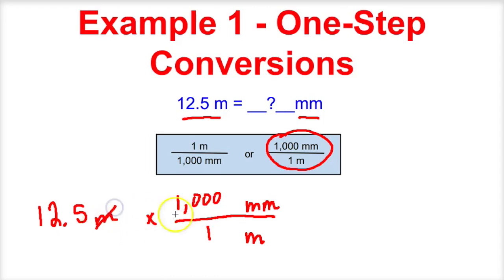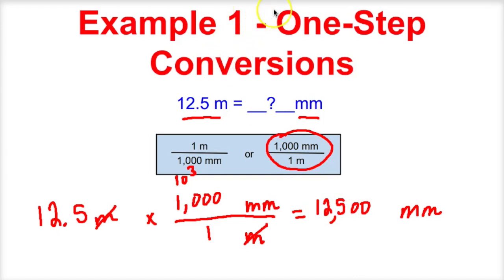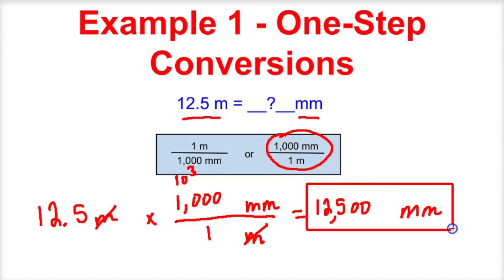Now we can see that meters on top and bottom are going to cancel out, leaving us with millimeters. So we get our calculator out and take 12 and a half times 1,000. When you multiply by a power of 10, all you're doing is moving the decimal to the right. 1,000 is the same thing as 10 to the third, so if we move this decimal to the right three times, we should end up with 12,500. So 12 and a half meters is the same thing as 12,500 millimeters.